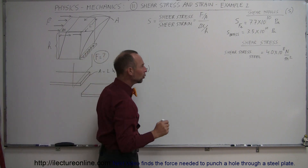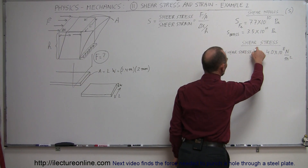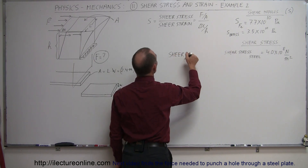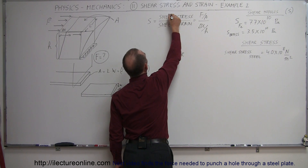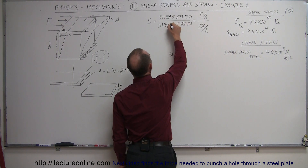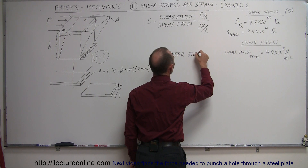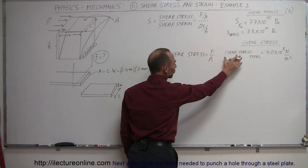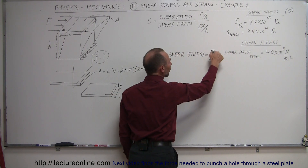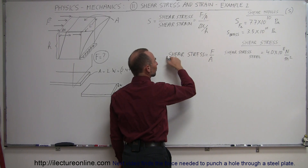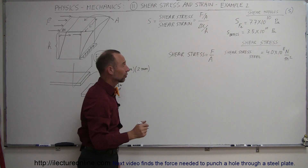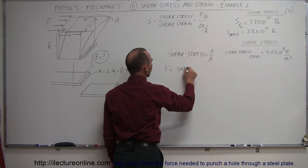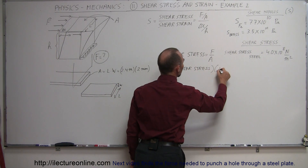For that, we need to know the shear stress. Shear stress is defined as force divided by area. So if the shear stress of a material is given and we want to know how much force is required, we simply multiply the area times the shear stress to find the force. The force necessary equals the shear stress times the area of the cut.